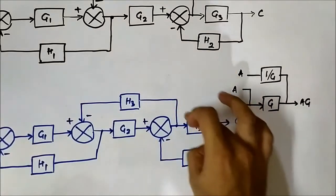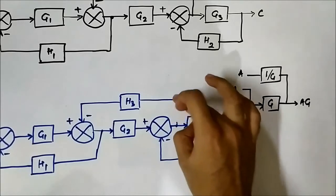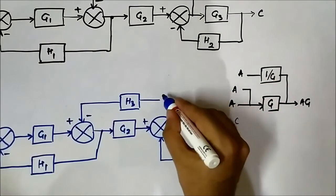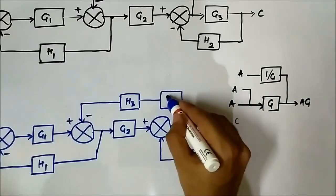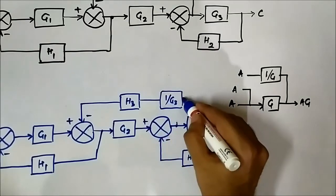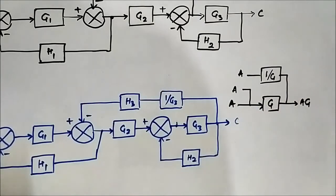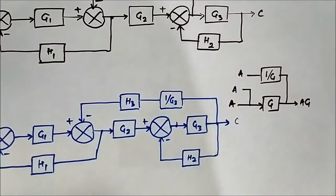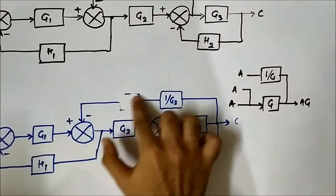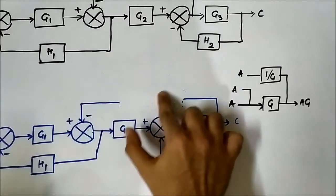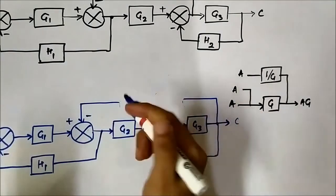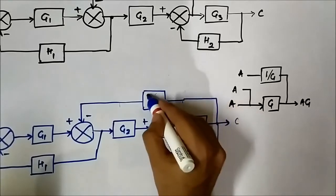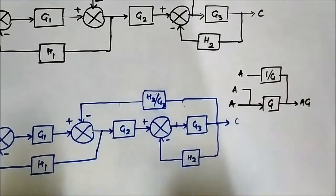Here also we do the same thing. When we shift this takeoff point ahead of G3, we use a 1/G3 block so that when the signal passes through it, it remains the same value. These two blocks — H3 and 1/G3 — are in cascade, so we can combine them to get H3/G3.